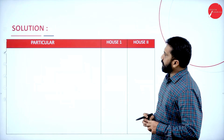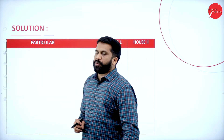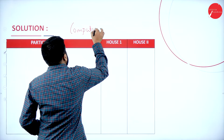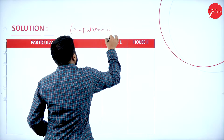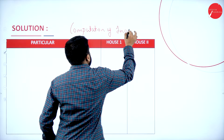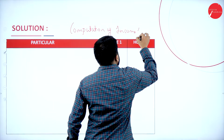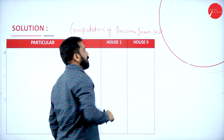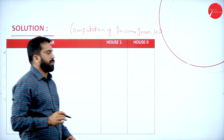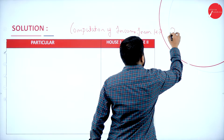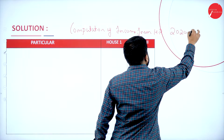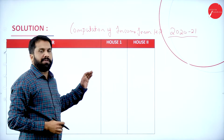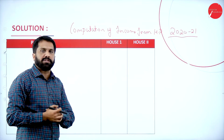Now I will go to the answer. The heading is: Computation of Income from House Property for the assessment year 2020–2021. We have house 1 as well as house 2.